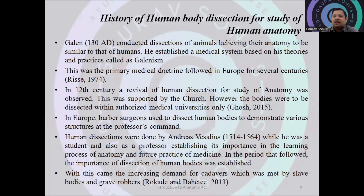Galen conducted dissections of animals, believing the anatomy of all beings was common. This became the primary medical doctrine followed in Europe for several centuries. However, in the 11th century, a revival of human dissection occurred, supported by the church, but only medical universities were permitted to perform it. In Europe, barber-surgeons used to dissect human bodies to demonstrate various structures at the command of professors.